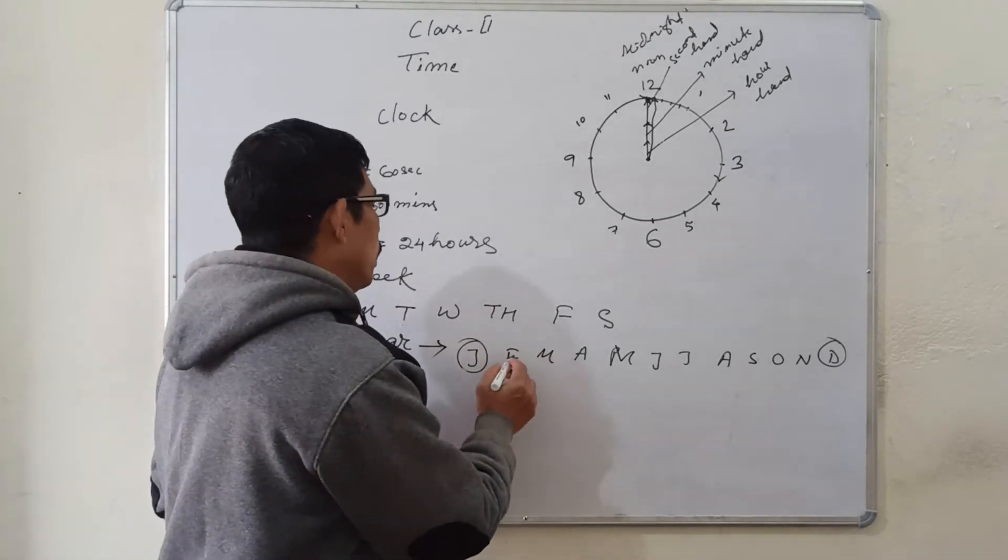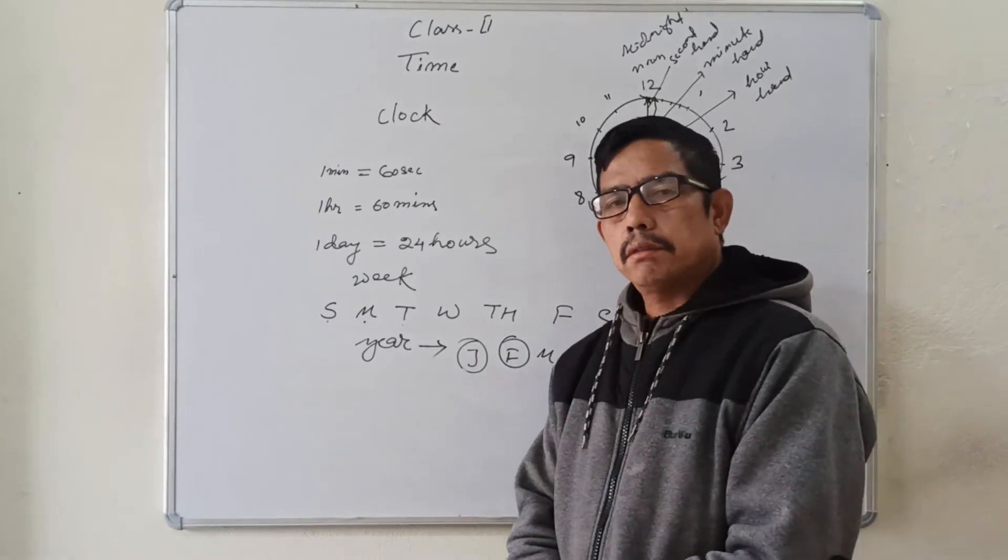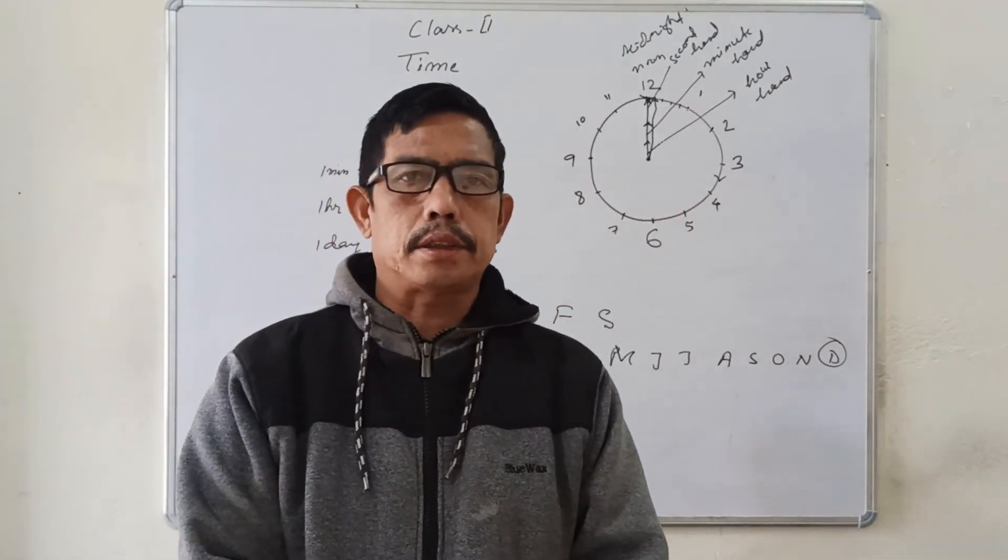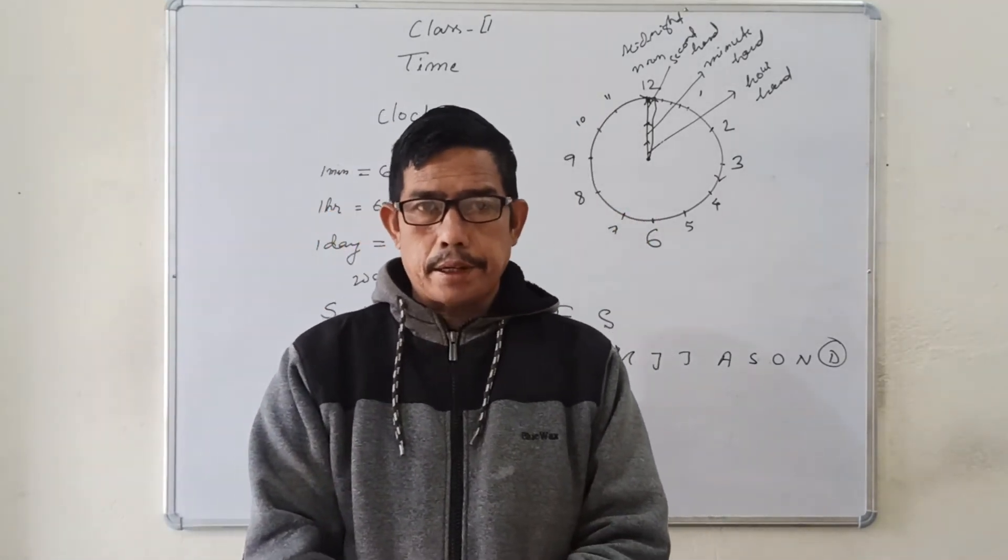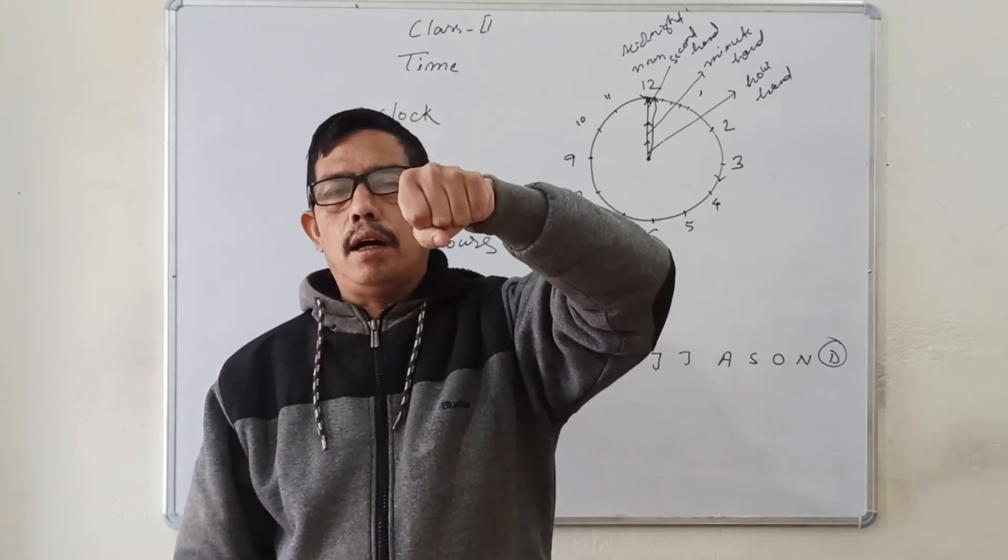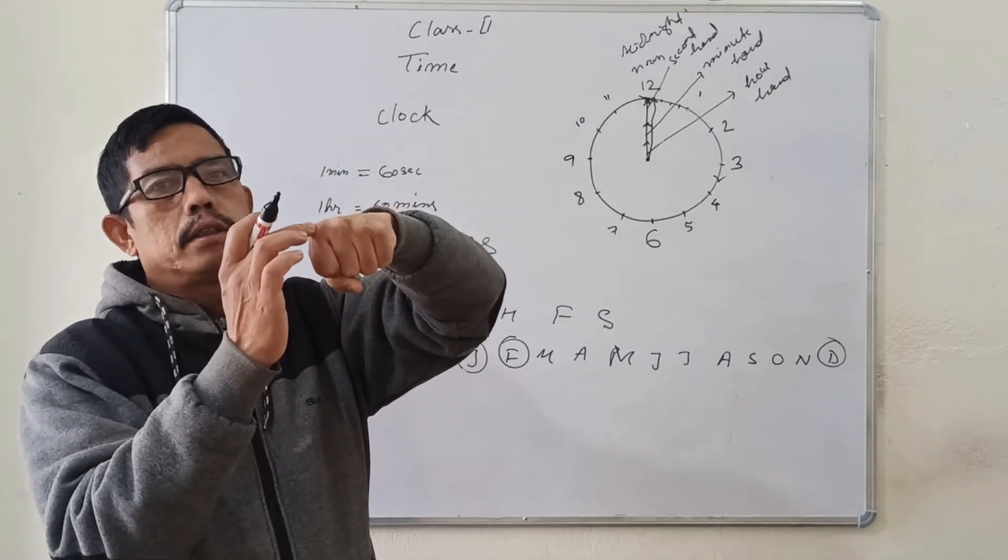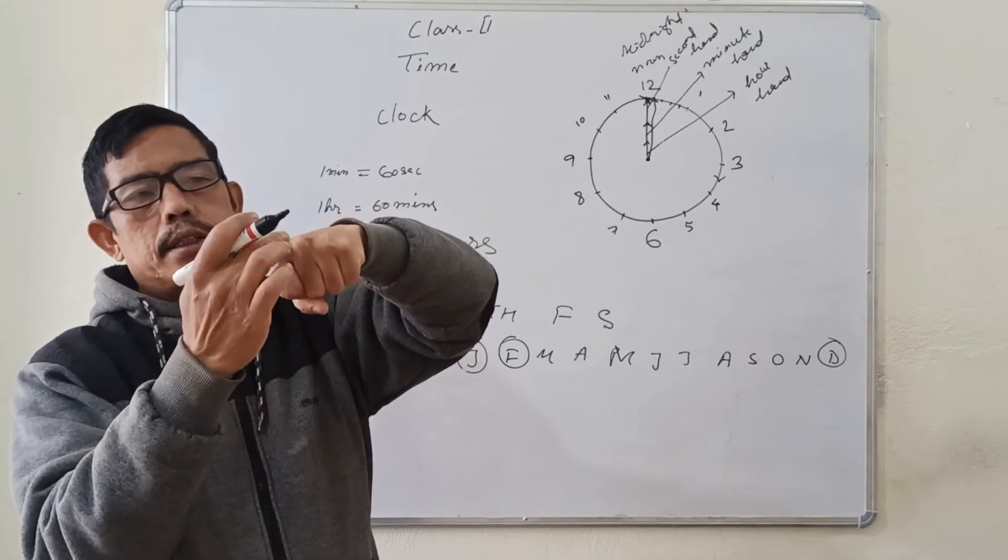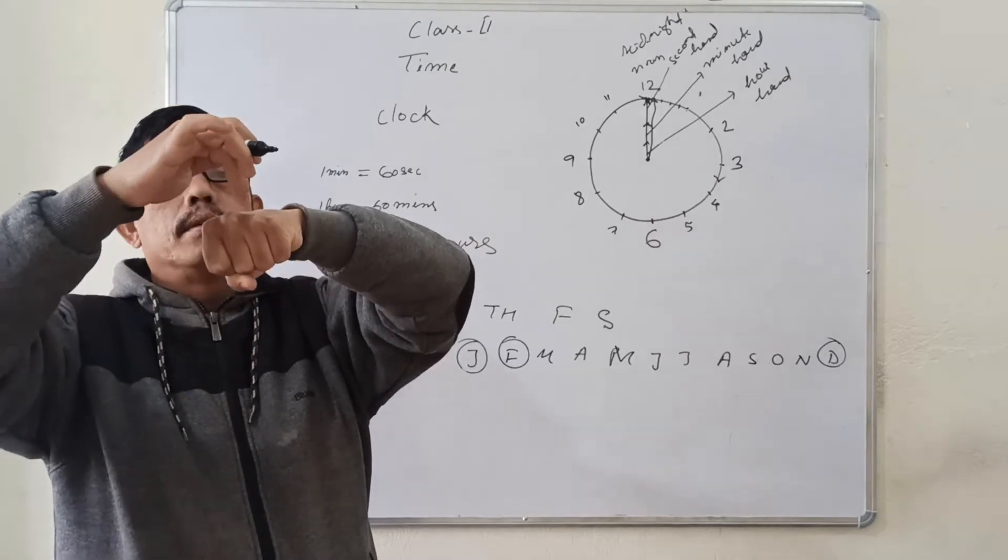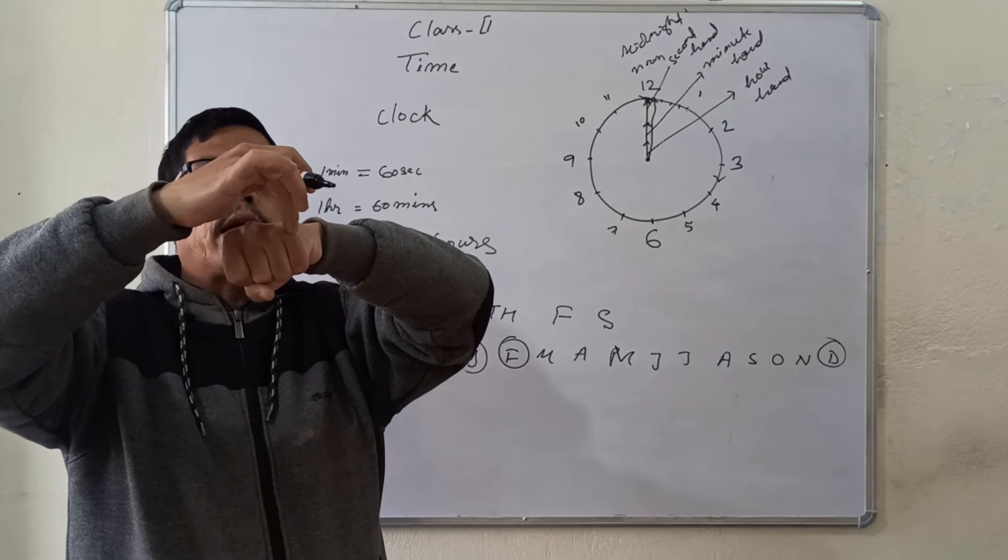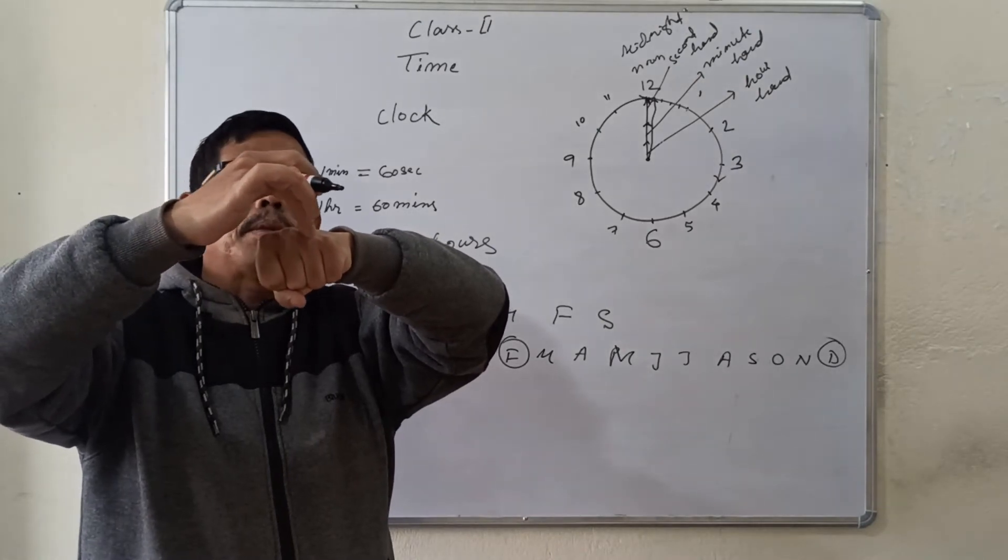Then, how to detect the months having 31 days and how to detect the months having 30 days. We can use one technique. Just hold your fingers like this and make your fist. Then, this pointed one, starting with January. Then, this depression one, February, March, April, May, June, July. Again, come here, August, September, October, November, December.